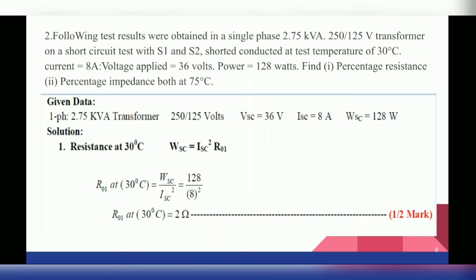Next numerical: The following test results were obtained for a single phase 2.75 KVA, 250/125 volt transformer. On short circuit test with S1 and S2 shorted, conducted at a test temperature of 30°C: Current ISC = 8 Ampere, Voltage applied VAC = 36 Volt, Power WHC = 128 Watts. Find: first, percentage resistance; and second, percentage impedance, both at 75°C.